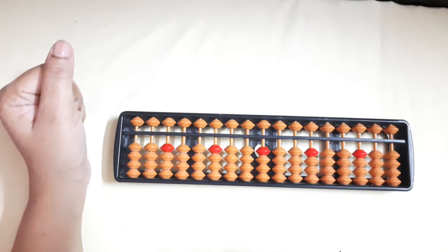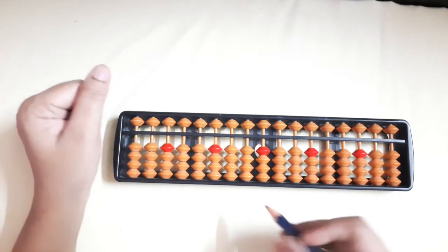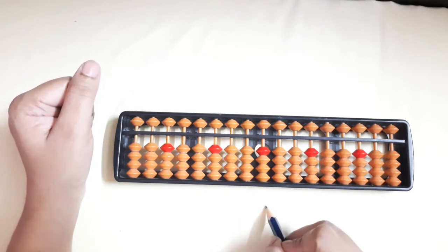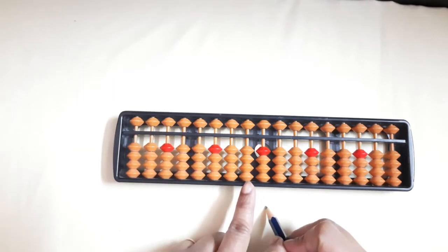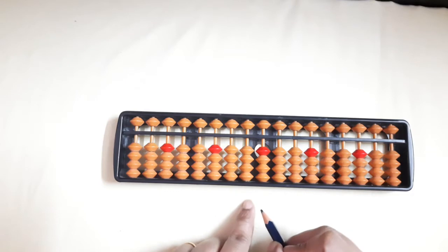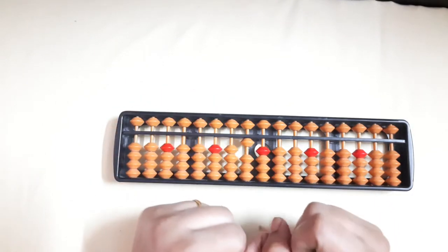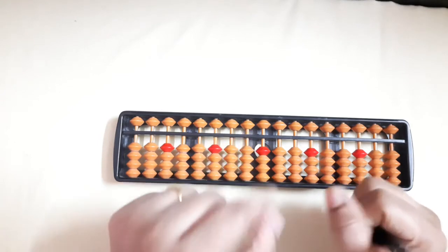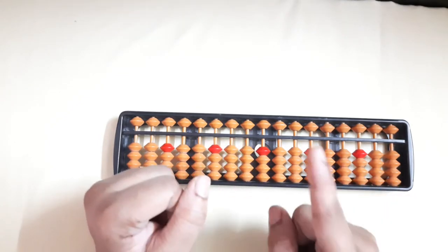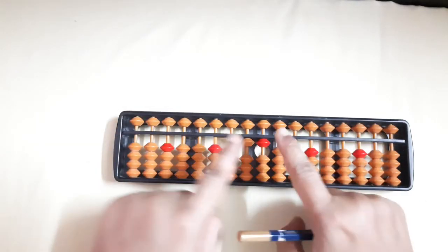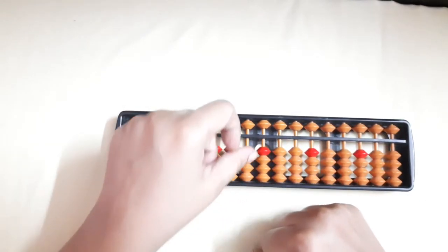Now 10. How will we write 10? 1, 0. So 2 digit, so we will go to the left rod. 1 and 0, 10. Same for 11. 1, 1, 11. So 1, 1, 11. Minus 11.